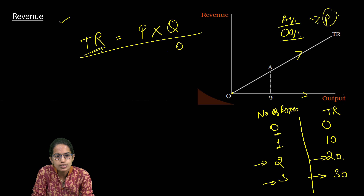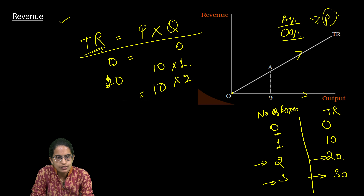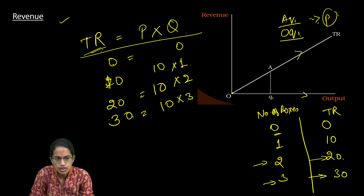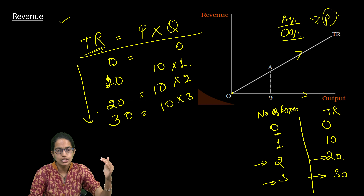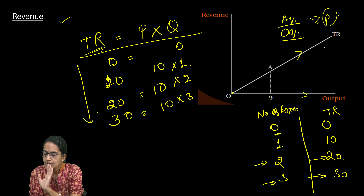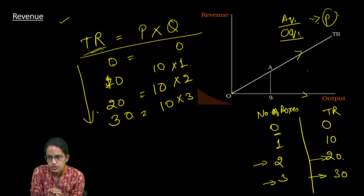To confirm with numbers: when quantity is zero, total revenue is zero. When quantity is one and price is 10, total revenue is 10. When quantity is two and price is 10, total revenue is 20. When quantity is three and price is 10, total revenue is 30. So total revenue increases linearly: 0, 10, 20, 30.